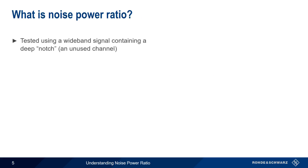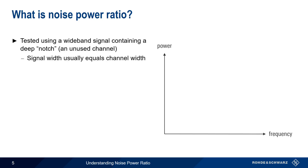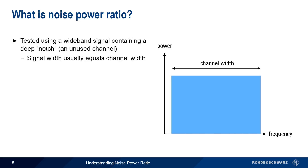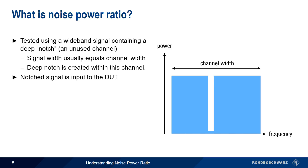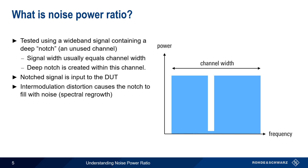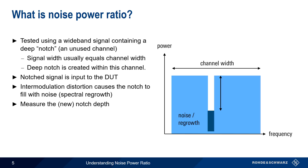Noise Power Ratio is tested by generating a wideband signal that contains a deep notch or unused channel. The signal width is usually the same as the nominal channel width, and a deep notch is created somewhere within this channel. This notch signal is then input to the device under test, for example an amplifier. Intermodulation distortion will cause the notch to fill with noise. This is sometimes referred to as spectral regrowth. We then measure this new notch depth using a spectrum analyzer.